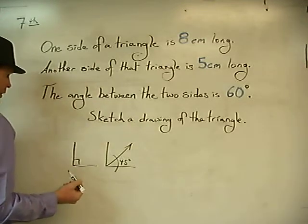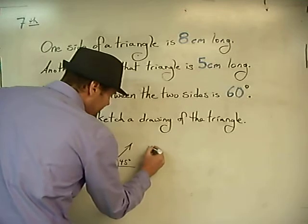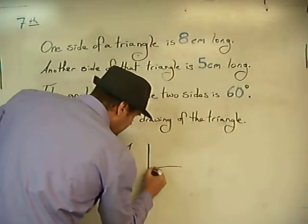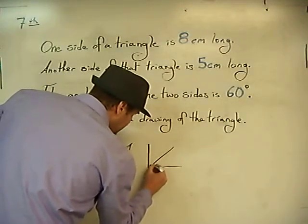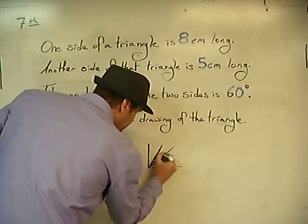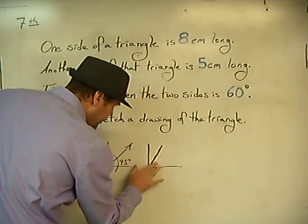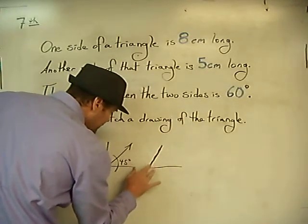So a 60 degree angle is going to be somewhere in between these two. A 60 degree angle is probably going to be something pretty close to that. So we've got our 60 degree angle here. That's not so hard.